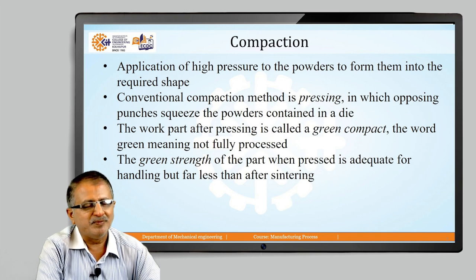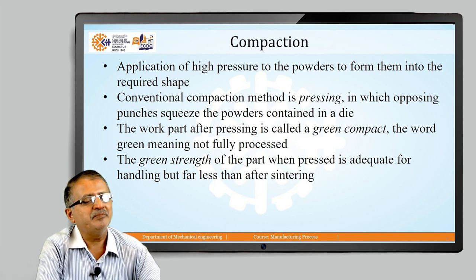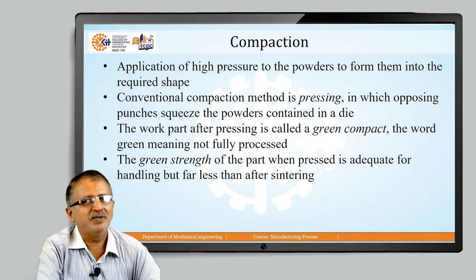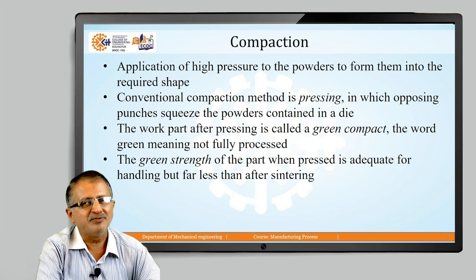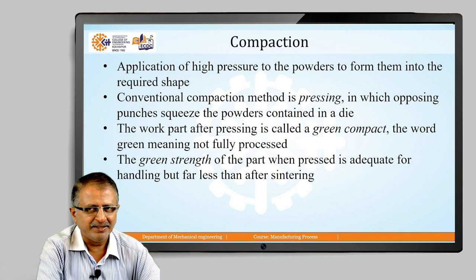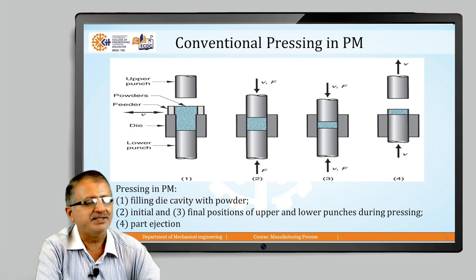After proper mixing we come to the compaction process. High pressure is applied to the powder to form a desired shape using press machines. The powder is squeezed in a machine with opposing punches and the work part after pressing is called a green compact. The green strength of the part should be adequate and is tested for its strength before being sent for sintering.